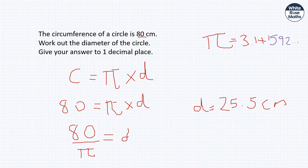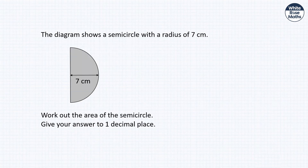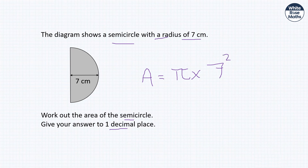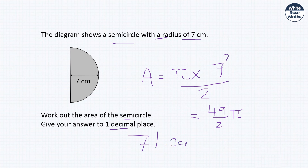A semicircle with radius 7 centimetres — work out the area to one d.p. A semicircle is half a circle, so area = πr² ÷ 2 = π × 7² ÷ 2 = 49π/2. On the calculator that gives 71.0 centimetres squared to 1 d.p.